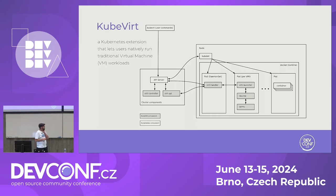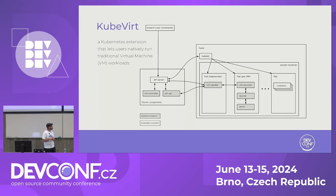Our stack in KubeVirt uses KVM and LibVirt — LibVirt manages KVM for us. Two key components to explain from KubeVirt are Virt Handler and Virt Launcher. Virt Handler is the daemonset that runs one per every node and is highly privileged. It talks with Virt Launcher. When you spin a VM, someone needs to configure LibVirt and manage the VM status — that's Virt Launcher, which is one per VM. So Virt Handler is one per node, just to have some basic understanding of the design of KubeVirt.